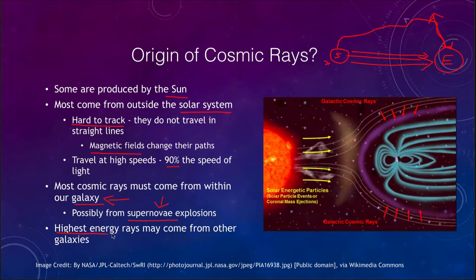The very highest energy cosmic rays that we see could actually come from other galaxies, streaming into the Earth as well. Looking at the image, we have some coming from the sun — perhaps from a coronal mass ejection, charged particles coming out that would strike the Earth's magnetic field. There could be galactic cosmic rays coming from all other directions, and those very high energy ones could be coming from other galaxies and perhaps even more energetic events.